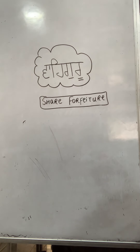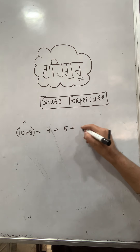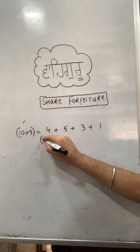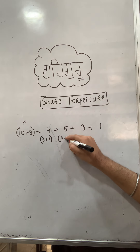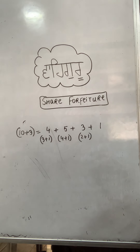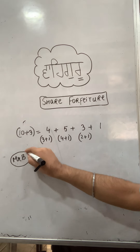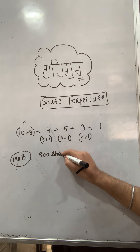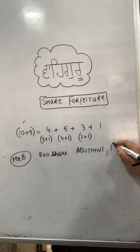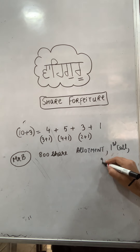Now Situation 2: Suppose a 10 rupee share with 3 rupee premium. The payment schedule is: 1 rupee application, then allotment, then 1 rupee first call. SPR is also applicable. Mr. B holds 800 shares of Reliance Industries Limited and did not pay the allotment, first call, second call, or final call. The company cancelled his shares.